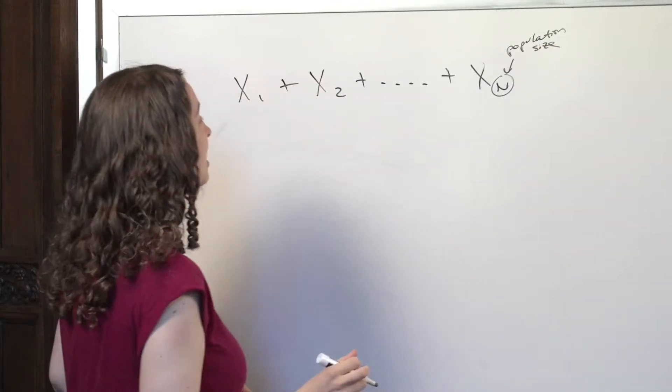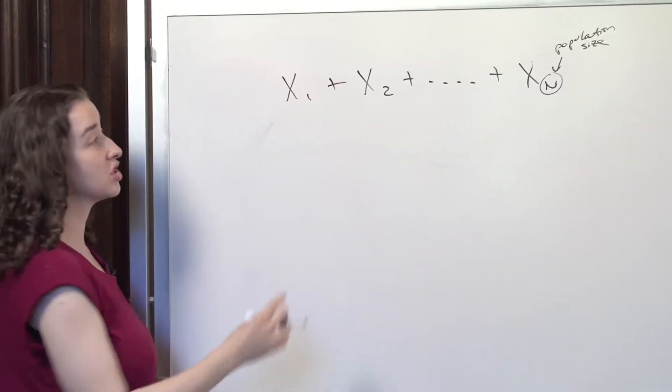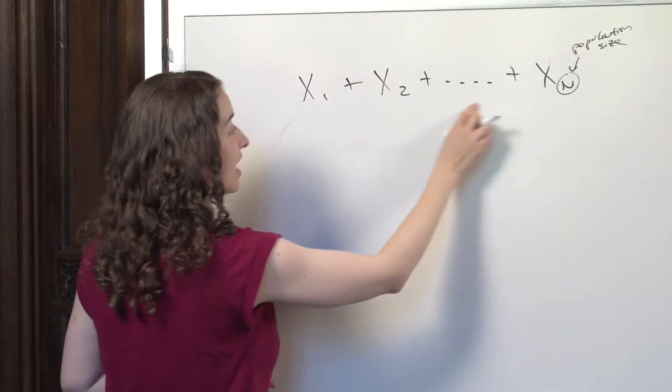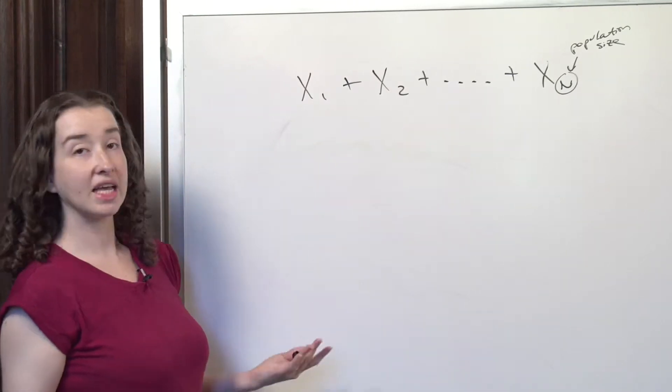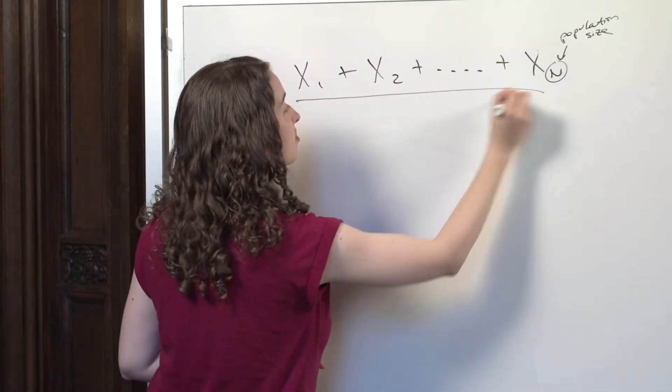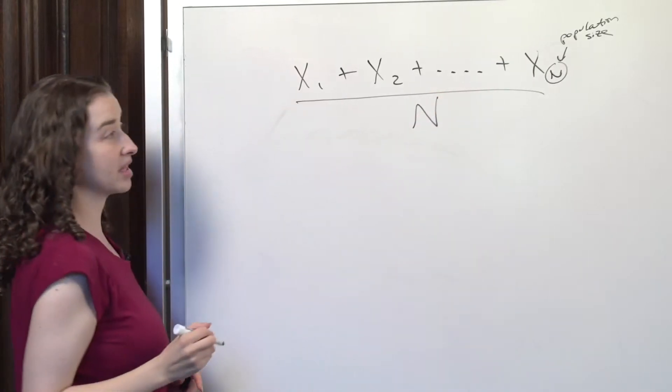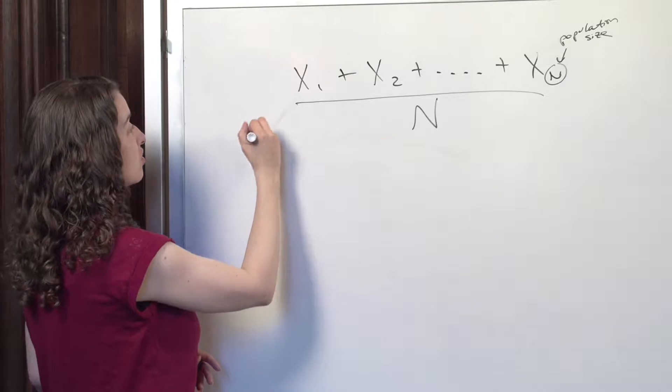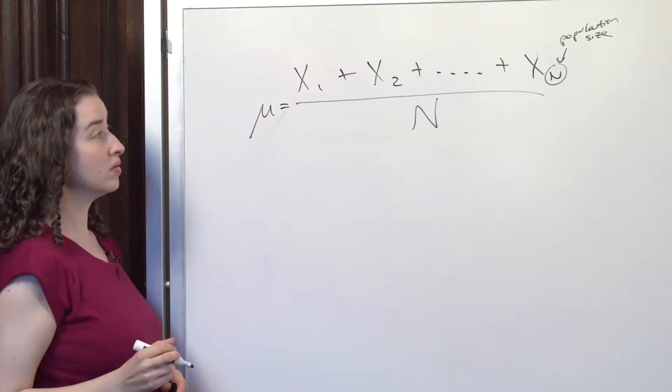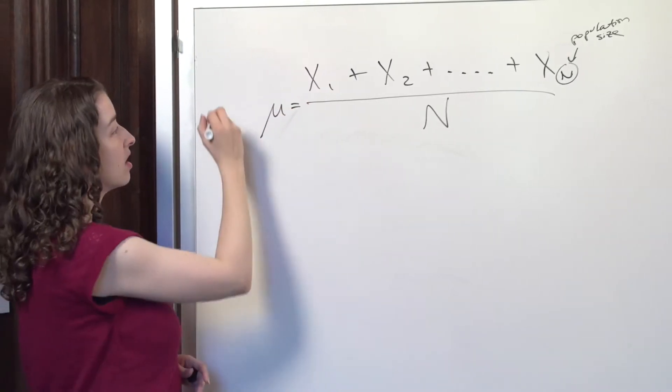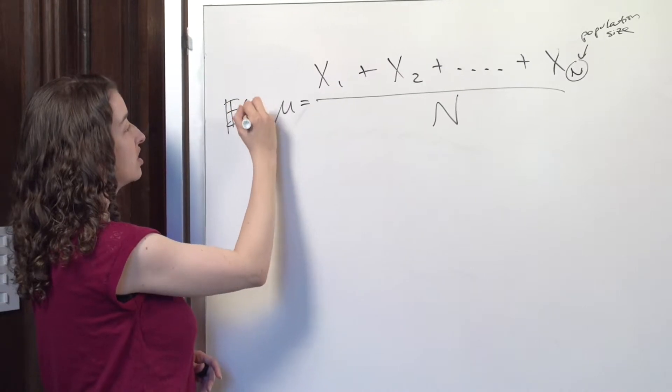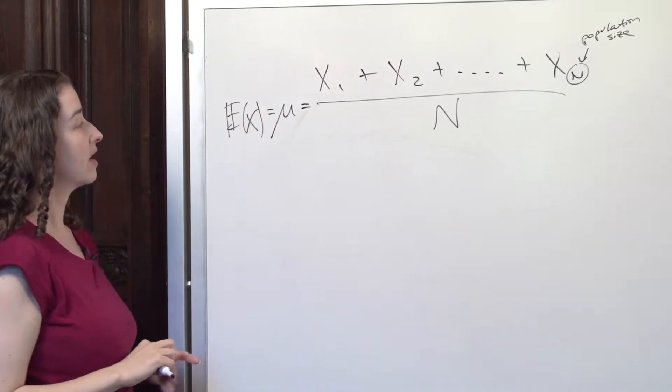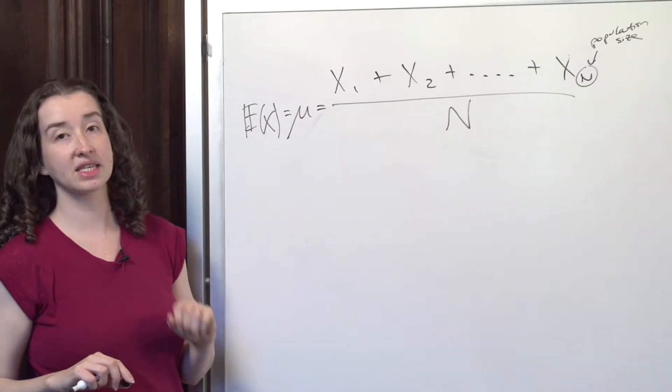Then if we want the mean of the entire population, we would add up the X values, whatever those X's are, maybe the heights, for every unit in the population, add them all up, divide by the population size. What do we call this? Well, if it's a population, we call it mu. And we can also call it the expectation of X.